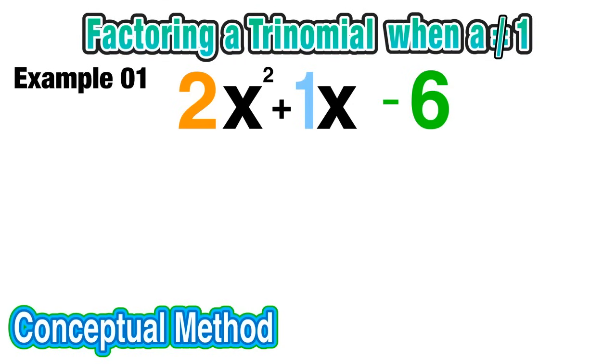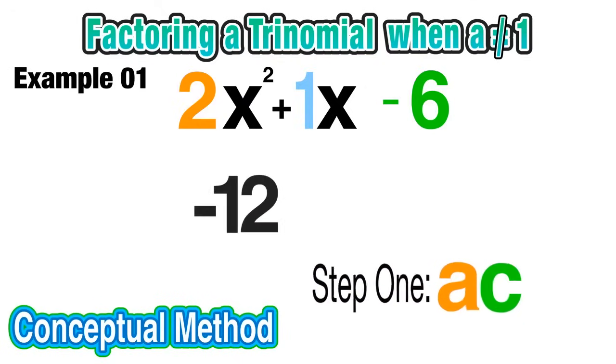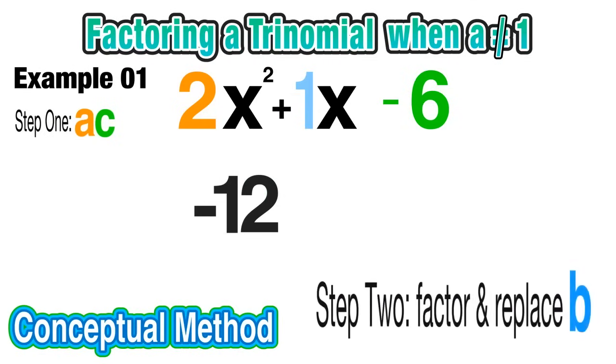So now we're going to use that conceptual method. The first step of that method is to multiply a and c together. So we have 2 times -6, which equals -12.